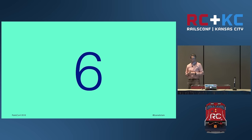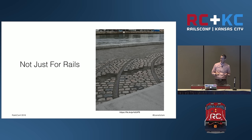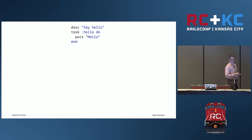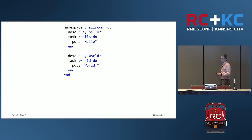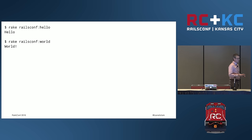Remember, Rake is a Ruby scripting utility, so it's not just for Rails. We can do this off the Rails — all you have to do is include the Rake gem and have a Rake file. Similarly, we can use Bundler in a plain old Ruby project. Here's a very simple rake task with a description. The task is 'hello' and it puts 'hello'. We run `rake hello` and it says hello. Then we add a second task, 'world', and put them in a namespace because they're similar tasks. A namespace groups like tasks together and becomes part of the name. So `rake railsconf:hello` says hello, `rake railsconf:world` says world.